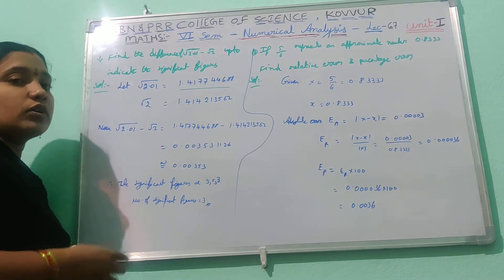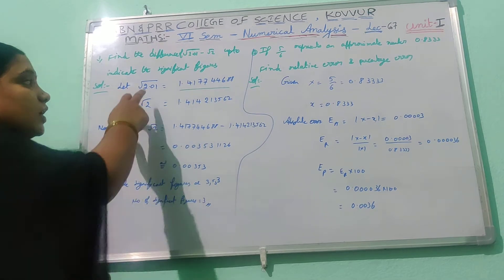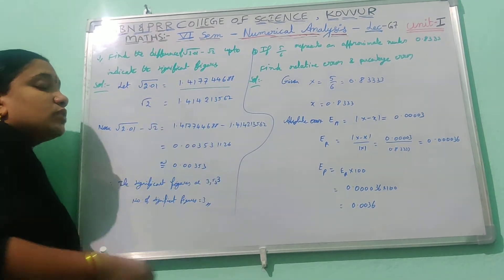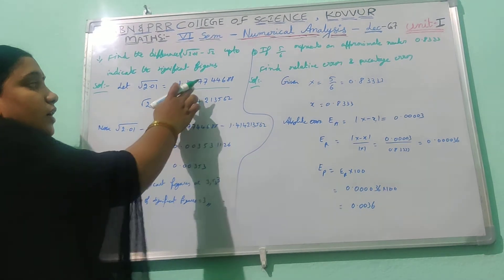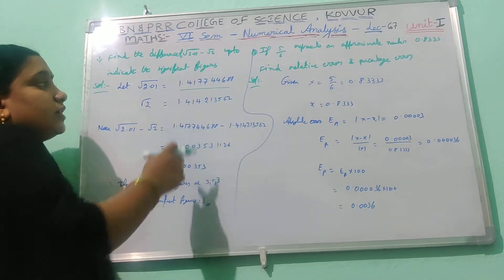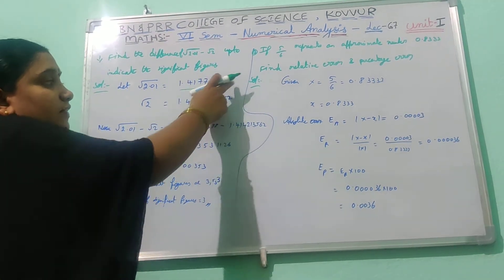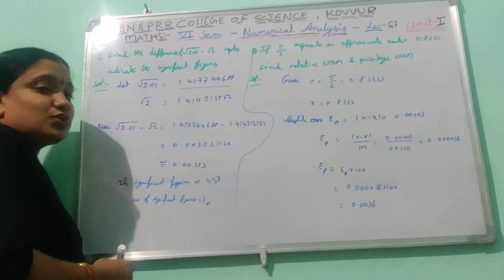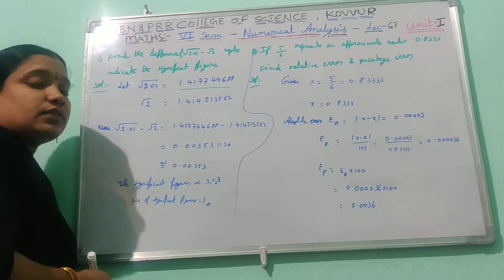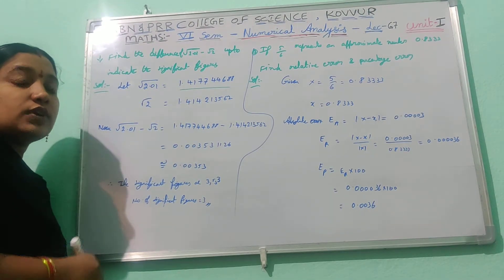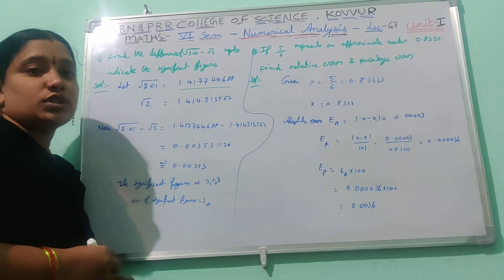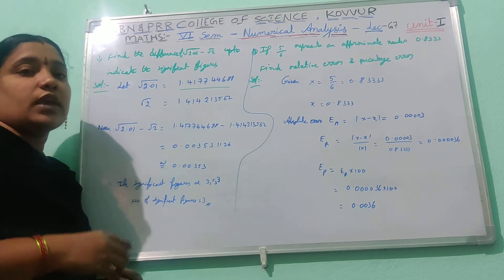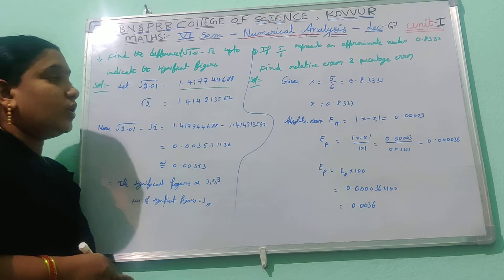A scientific calculator gives us more decimal values. In this class we use 8 to 9 decimal values from the scientific calculator. For the exam, the scientific calculator is allowed.